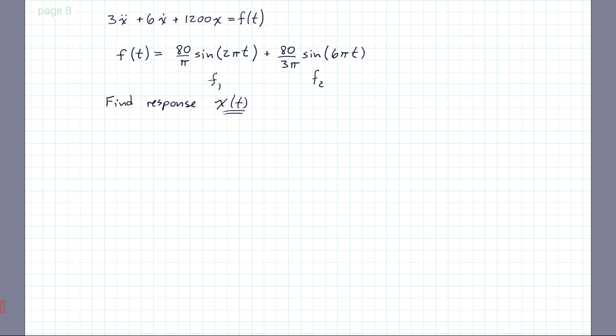The first thing we're going to need is to find the transfer function. Transfer function in this case, it's really easy. It's the output x over the input F, and you should be able to just look at it and tell that it's going to be 1 divided by 3s² plus 6s plus 1200. This is my transfer function.